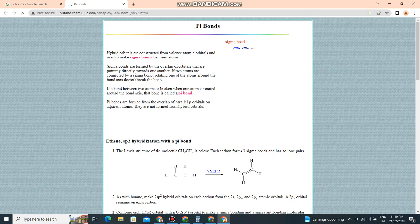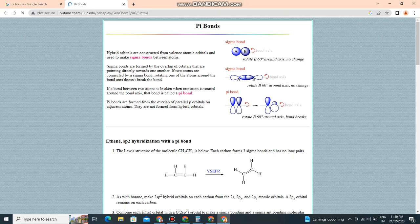Pi bonds: Hybrid orbitals are constructed from s and p orbitals and used to make bonds between atoms.